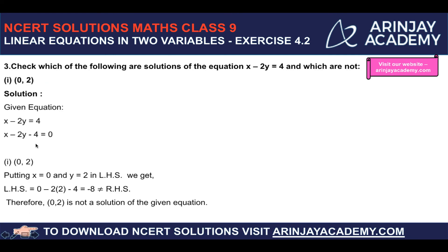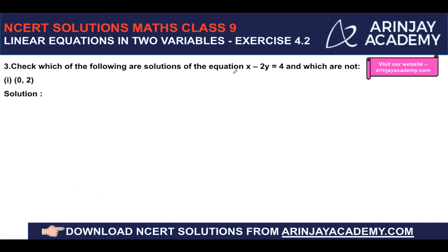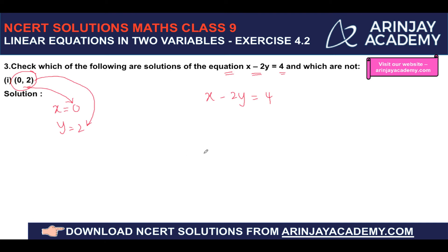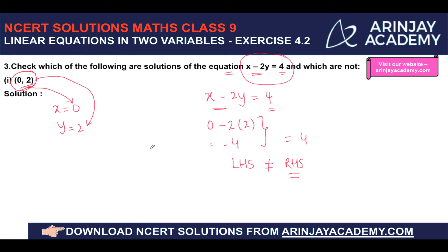Next question: check which of the following are solutions of x minus 2y equals 4. For the pair (0, 2), if x equals 0 and y equals 2, the left-hand side becomes 0 minus 2 into 2, which equals minus 4. Since minus 4 is not equal to the right-hand side of 4, (0, 2) is not a solution.